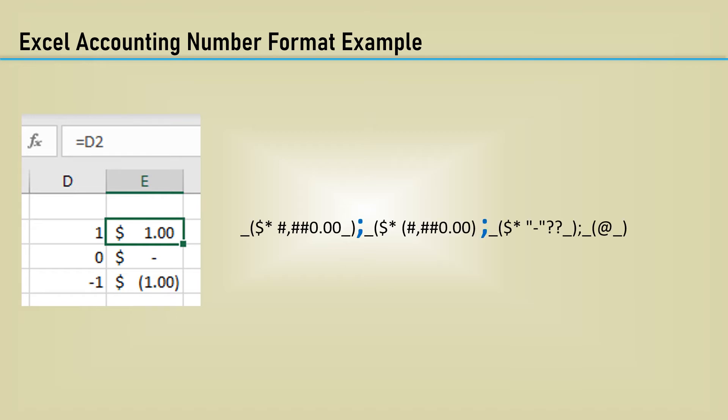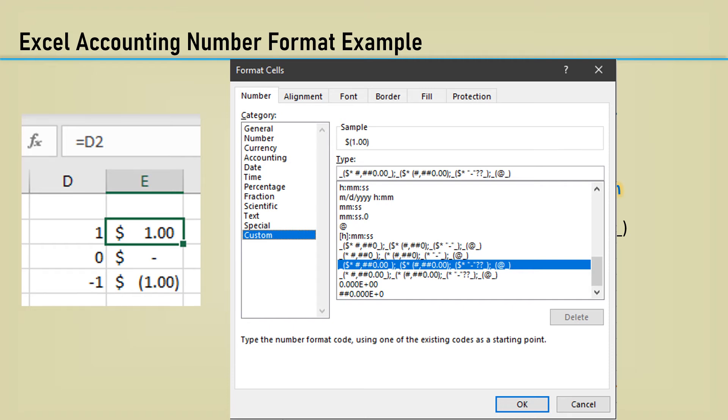One familiar format is called accounting. The cell on the right is set to be equal to the number on the left, with just a different number format applied. It puts a dollar sign at the beginning of the cell, formats the number with two decimal places, displays a dash if zero, and puts parentheses around the number if it's negative. This is the formatting code for that particular accounting format. The sections are separated by semicolons. The first section is for positive numbers. The second section is for negative numbers. And the third is for zero values. And the fourth is for text. Again, many formats are already there in Excel for you to use.